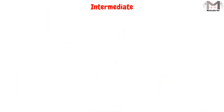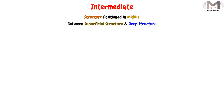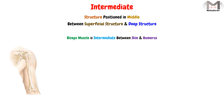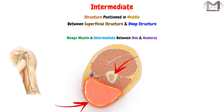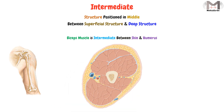The term intermediate means that the structure is positioned in the middle between a superficial structure and a deep structure. So if we say the biceps muscle is intermediate between the skin and the humerus, that means the biceps muscle is positioned in the middle between the skin, which is the superficial structure, and the humerus, which is the deep structure. So the meaning of intermediate is in the middle.